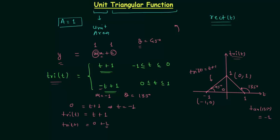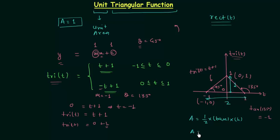Now we will calculate the area of this unit triangular function. Area of a triangle is equal to one half multiplied by base multiplied by height. The base is equal to 2 and the height is equal to 1, so the area is equal to one half multiplied by 2 multiplied by 1, which equals 1. So you can see the unit triangular function has unit area.